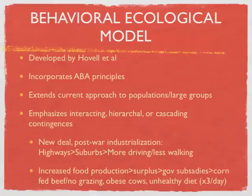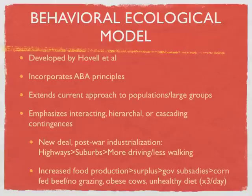We had a lot of surplus corn sitting around, so quite some time ago we decided to start feeding it to cows. Corn is not something cows would normally eat — they would normally be grass-fed and engage in a lot of grazing. But now that they are corn-fed, the result is that we have a lot of obese cows. As a result, we now eat cows that have a higher percentage of fat in them, so we are consuming more fat in our diet. We also have more cows and larger cows, so more meat is being produced, giving us the ability to eat meat portions up to three times a day.